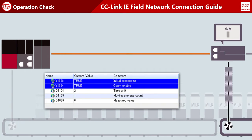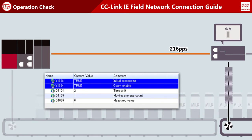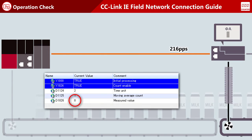The remote station starts counting the number of pulses. The count value is sent to the master station over the network. The master station updates the measured value.